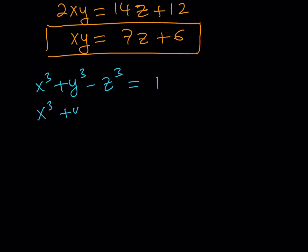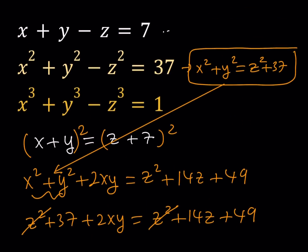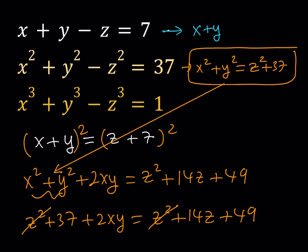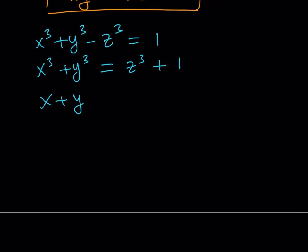I'd like to isolate, like before, the sum of x cubed plus y cubed. And that is going to become z cubed plus 1. Now, I have x plus y in terms of z right here. As you can see, I didn't write it, but you know, x plus y is equal to z plus 7. So I could go ahead and use this. Let's go ahead and copy that here. I have x plus y is equal to z plus 7.